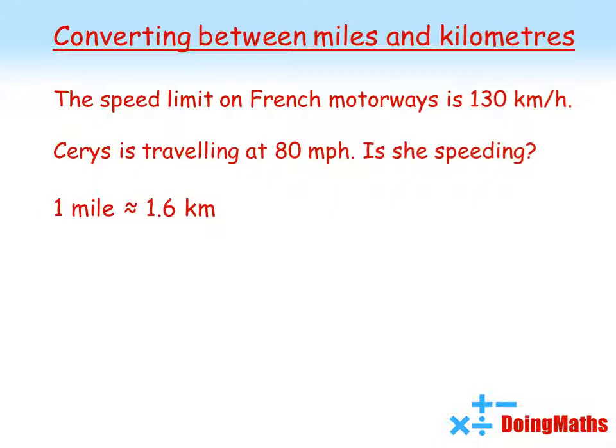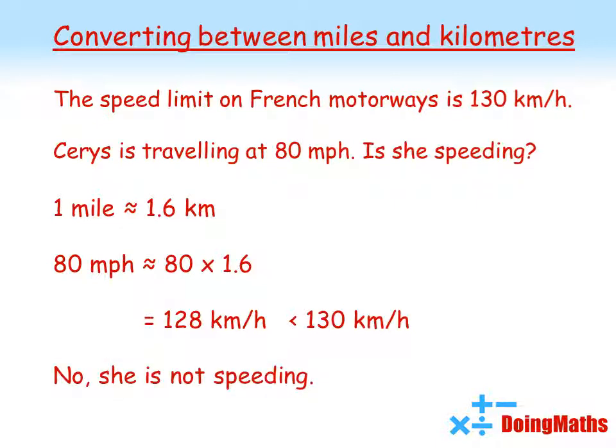Here's our conversion. I've chosen to change Keris' speed. We're changing miles per hour into kilometers per hour. We're going to need a bigger number, so we times by 1.6, giving us an answer of 128 kilometers per hour. Now, this is lower than 130. So, no, she is not speeding.